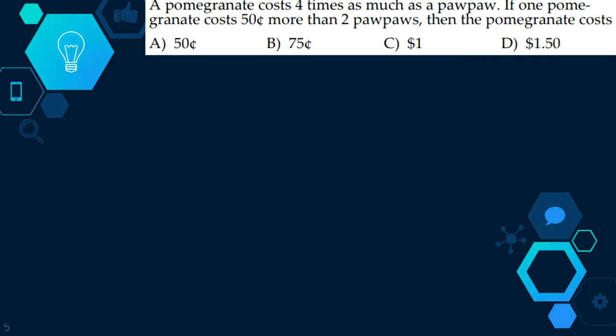Our next question is, a pomegranate costs four times as much as a pawpaw. If one pomegranate costs fifty cents more than two pawpaws, then the pomegranate costs. Fifty cents more than two pawpaws means it would be one dollar for four pawpaws. Because the first sentence says a pomegranate costs four times as many as a pawpaw, fifty cents, and we can get four pawpaws. If we multiply the two pawpaws, which equals fifty cents, we would get one dollar equals four pawpaws. So our answer would be C.